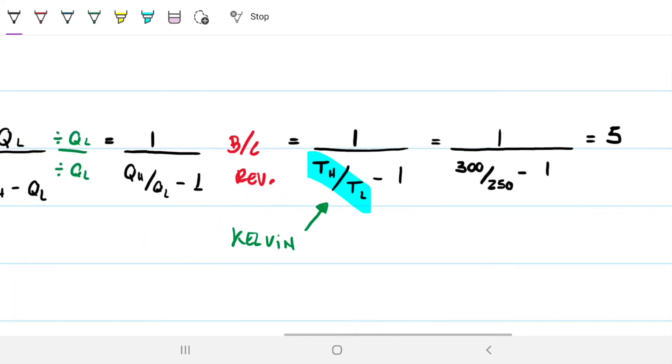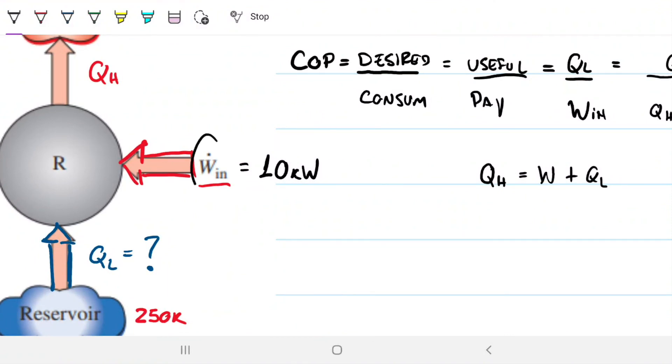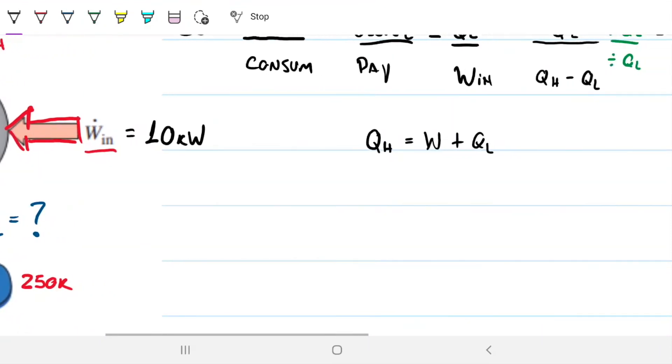What does that mean? So for every unit of energy that I put into the refrigerator with my work, I'm going to get 5 units of energy out of my QL.